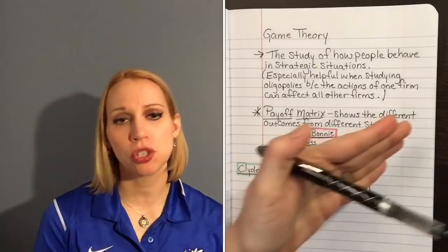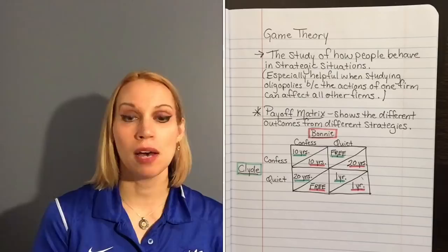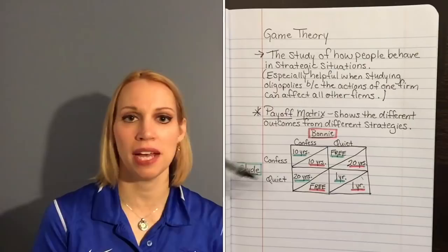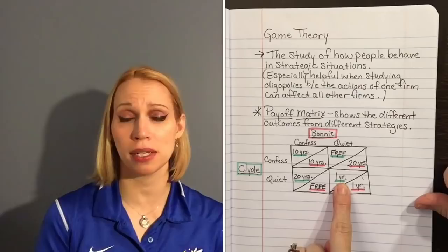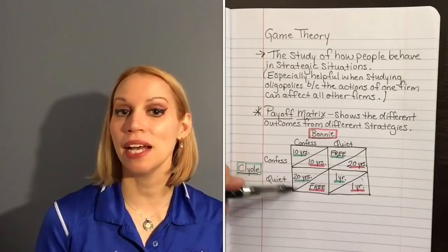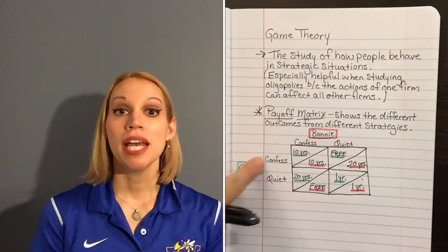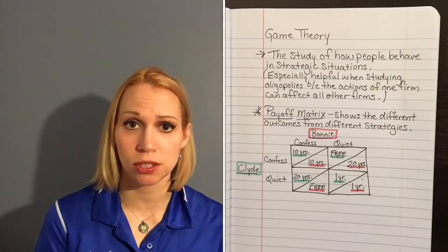We have a diagram called a payoff matrix that helps us understand these strategies, choices, and their different outcomes. We have Bonnie on one side and Clyde on the other, each with two choices: talk or not confess. If they both stay quiet, the police have no confession for the serious crimes, so the most they can be put away for is one year on the minor charge. If Bonnie confesses and Clyde stays quiet, she gets off scot-free and Clyde goes away for 20 years — and vice versa. If they both confess, they both go to jail for 10 years.